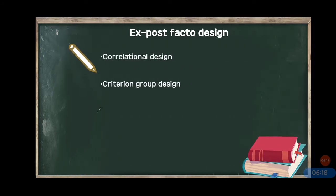Next comes exposed factor design. Exposed factor design means when something is already done — we cannot manipulate the independent variable and can only select participants through sampling or selection. For example, if we want to see how obese people's self-esteem will be, we have to select those who are already obese. We cannot make someone obese. Then we test their self-esteem and observe the effect on the dependent variable.